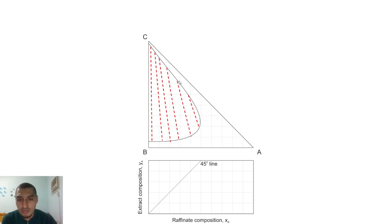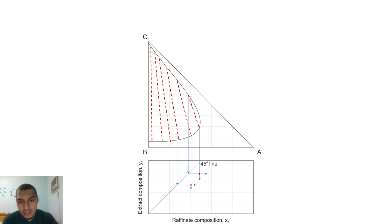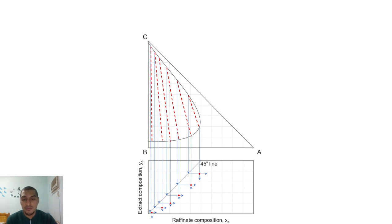Each two endpoints of a tie line are represented by one single point on the XY diagram with an X and a Y coordinate. For example, starting with the first tie line: the X goes straight down without change, and the Y is reflected on the 45-degree line to intersect the X axis, giving one point on the equilibrium curve. The same is done for the second tie line, the extract point, and all remaining tie lines. With five or six tie lines, we get five or six points on the equilibrium curve.